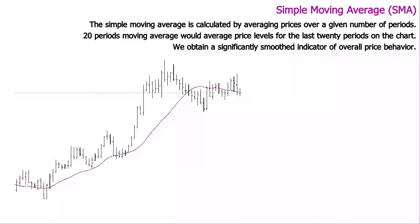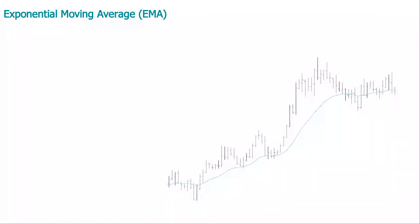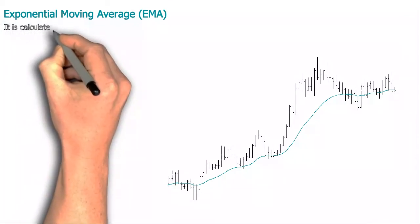The Exponential Moving Average is calculated by taking the difference between the current price and the previous value and multiplying it by a number dependent on the number of periods taken into account, and the result is added to the previous Exponential Moving Average value.